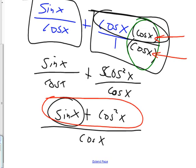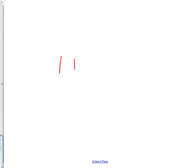Can't you just cancel these? No. You can't just go cancel these — here's why: because it's an addition. It would be like saying one plus five over five — can't you just cancel those fives? No. Because there's a plus there. If this had been a times, then you can cancel those fives. But if there's a plus there, you can't.